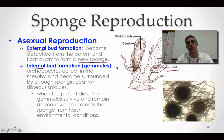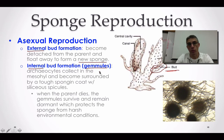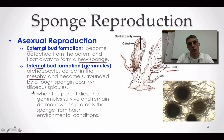In addition to external bud formation, we're also going to have internal bud formation. We're going to call these internal buds gemmules. These gemmules are very similar to the cysts we talked about back in Chapter 11 with some of the protozoans. The archaeocytes are going to collect in the mesohyl or mesenchyme of the sponge and become surrounded by a tough spongin coat embedded with silica spicules — so silica spicules are going to make up this gemmule.